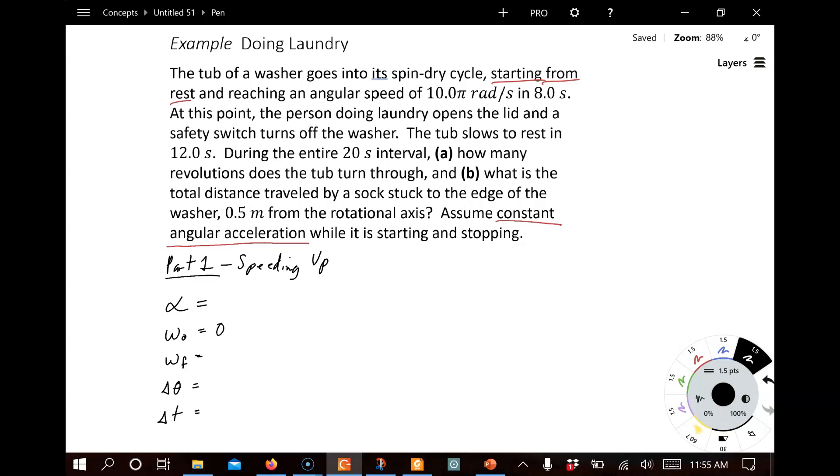It reaches an angular speed of 10π radians per second. Now, I don't know if this is going clockwise or counterclockwise, but I'm going to choose to say that the rotation, if we look at the washing machine, it's spinning counterclockwise as it speeds up. And so that's going to be positive. I'll take that to be positive 10π radians per second. And we need one more bit of information. What's that going to be? We know what the time is, right? Eight seconds.